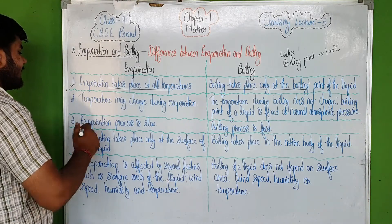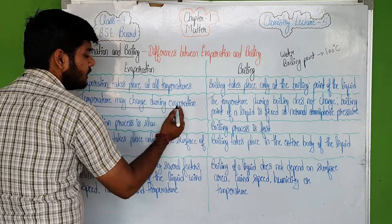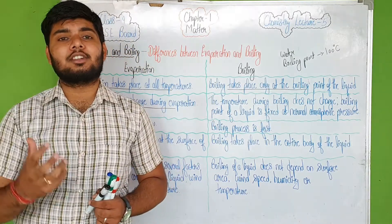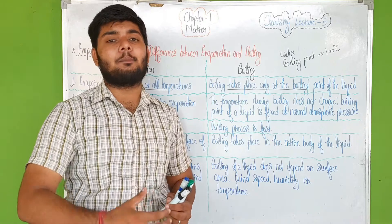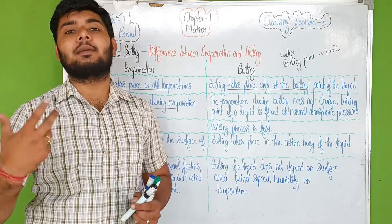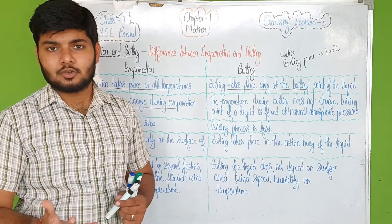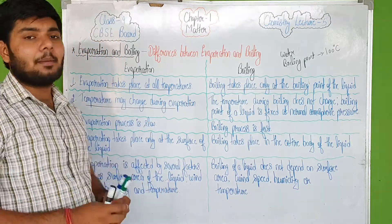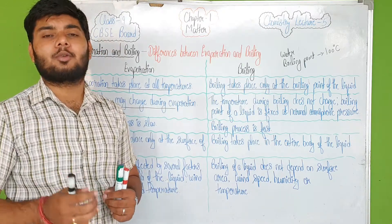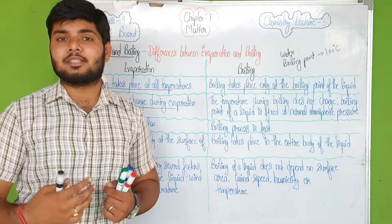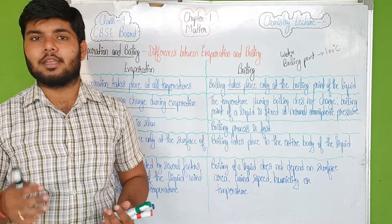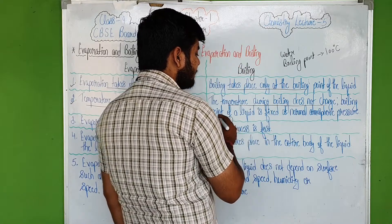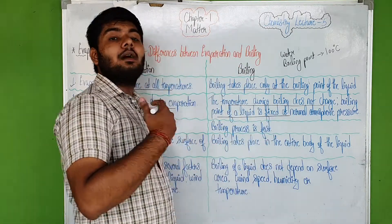Now the second point: the temperature changes during evaporation. When the evaporation process is occurring, the temperature of the liquid can be low or high — it can change — and the process of evaporation still continuously continues. We don't need a fixed temperature. Whereas, the temperature during boiling does not change, because the boiling point of a liquid is fixed at normal atmospheric pressure.